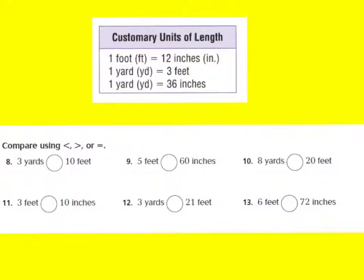Let's look at these practice problems. It says compare using less than, greater than, or equal to. So we're going to compare 3 yards to 10 feet. I want to see how many feet 3 yards equals to. I know that 1 yard equals 3 feet, so if I have 3 yards, then 3 times 3 gives me 9. So I have 9 feet equal to 3 yards. I know that 9 is less than 10, so 3 yards is less than 10 feet.